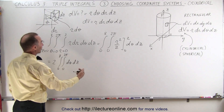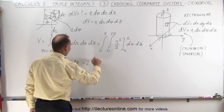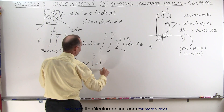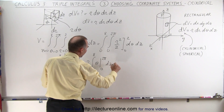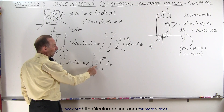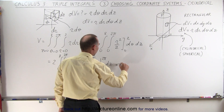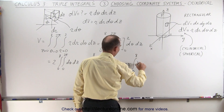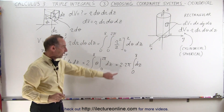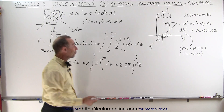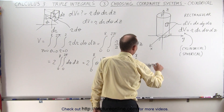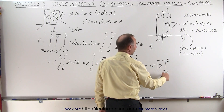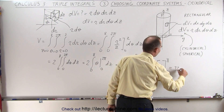Integrating d theta is easy — it simply becomes theta evaluated from 0 to 2π. So we have 2 times the integral from 0 to 8 of theta evaluated from 0 to 2π, times dz. Plugging in gives 2π minus 0, so this becomes 2 times 2π times the integral from 0 to 8 of dz, giving 4π out front. Integrating dz is easy — that's 4π times z evaluated from 0 to 8. Plugging in gives 4π times 8, which is 32π.